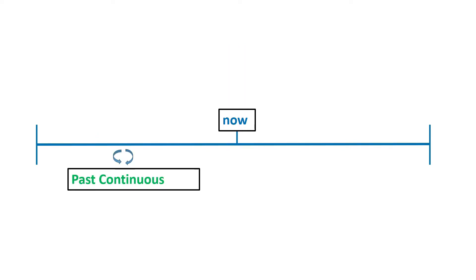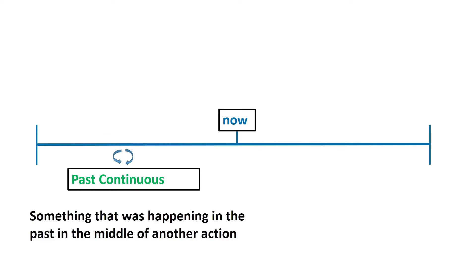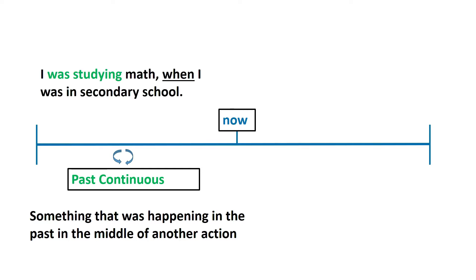Past continuous. That is something that was happening in the past, in the middle of or during another action. For example, I was studying math when I was in secondary school. Was studying shows us the past continuous.